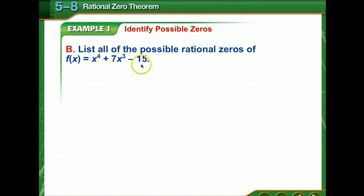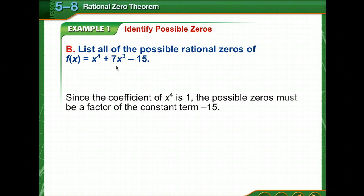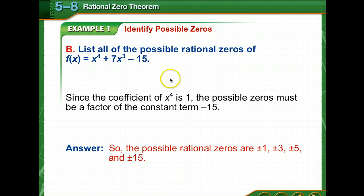Now we're to list all the possible rational zeros of this polynomial. Notice that our coefficient is 1, so all the possible zeros must be factors of negative 15. It could be plus or minus 1, plus or minus 3, plus or minus 5, or plus or minus 15. Those are our possible rational zeros.